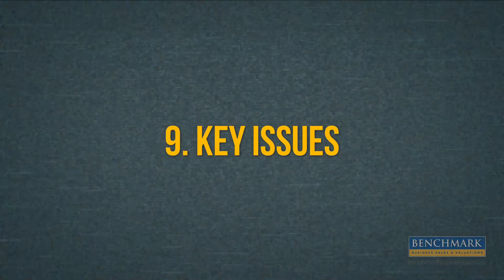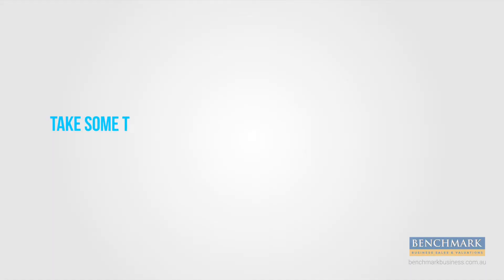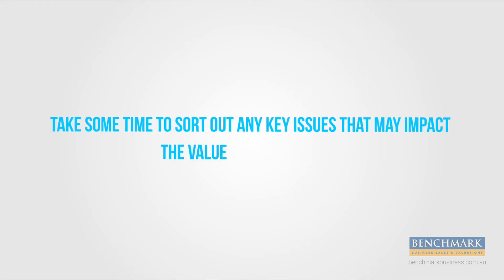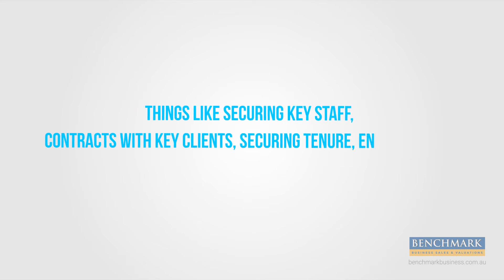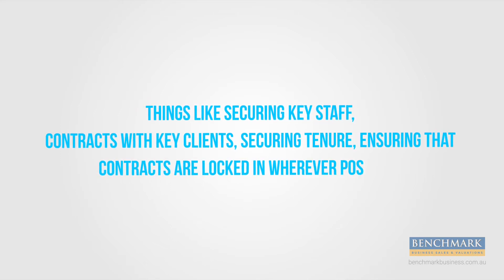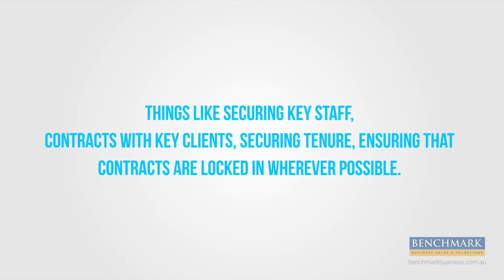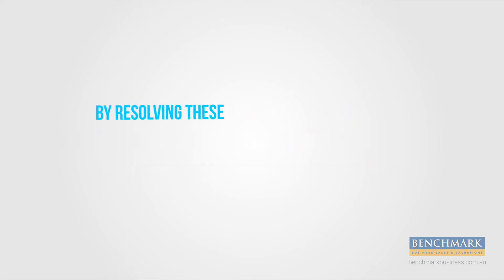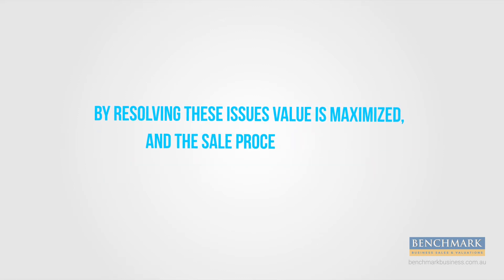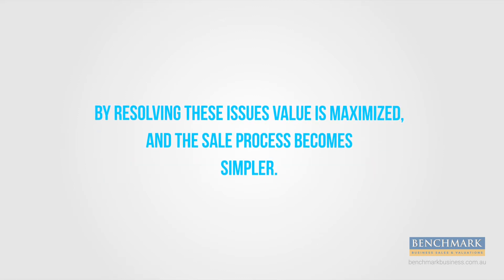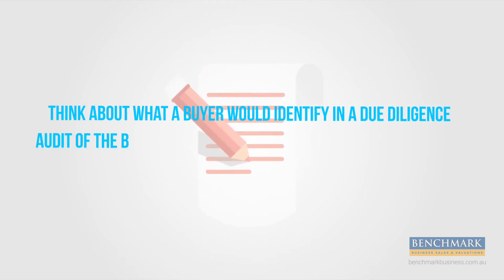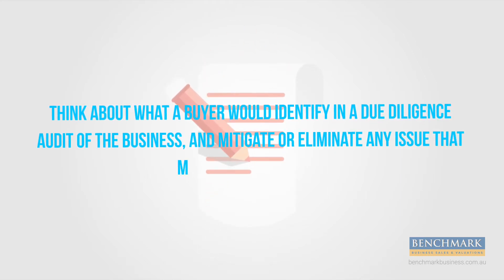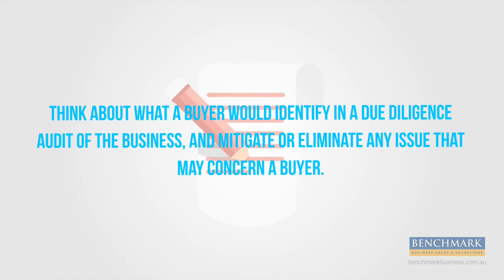9. Key issues. Take some time to sort out any key issues that may impact the value of the business — things like securing key staff, contracts with key clients, and securing tenure. Ensuring that contracts are locked in wherever possible. By resolving these issues, value is maximised and the sale process becomes simpler. Think about what a buyer would identify in a due diligence review of the business and mitigate or eliminate any issue that may concern a buyer.